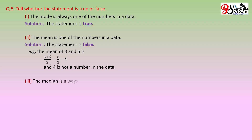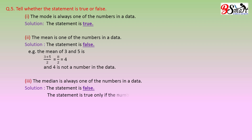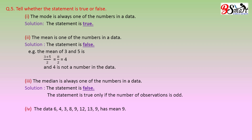Number 3: the median is always one of the numbers in a data. Solution: the statement is false, because it is true only if the number of observations is odd. Number 4: the data 6, 4, 3, 8, 9, 12, 13, 9 has no mode. Solution: the statement is false, because the mean of the given data is 8.